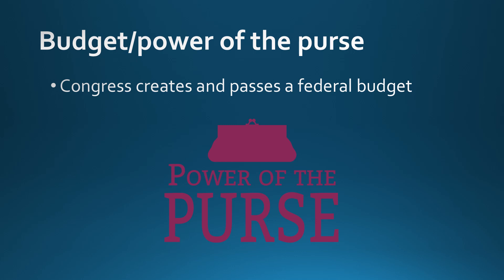Congress creates and passes a federal budget. Later in the year we'll go into a little bit more detail on that and how that works, with both the President and Congress having roles in that process. But for right now, we're going to focus on different ways that Congress exerts their Power of the Purse.